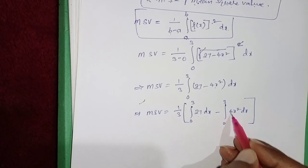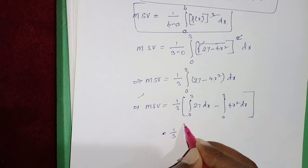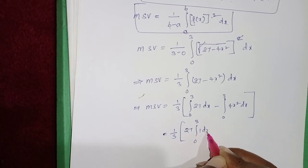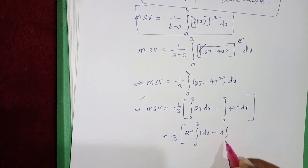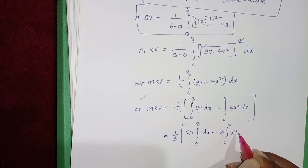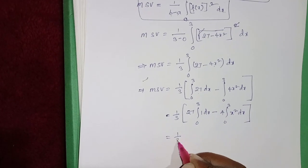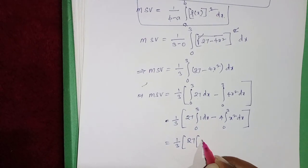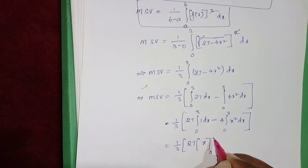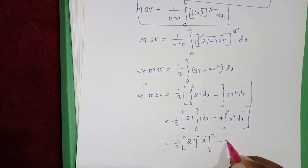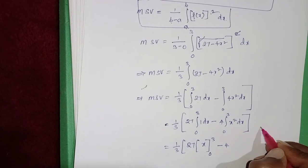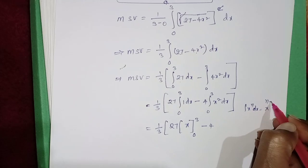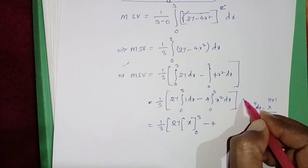Since 27 and 4 are constants, take them outside the integrals: (1/3) × [27 × ∫[0 to 3] 1 dx − 4 × ∫[0 to 3] x² dx]. The integral of 1 dx is x, evaluated from 0 to 3. For x² dx, we use the formula: ∫x^n dx = x^(n+1) / (n+1), where here n = 2.